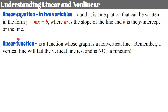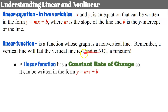To be a linear function, it's a function whose graph is a non-vertical line. Remember, a vertical line will fail the vertical line test and is not a function — so a vertical line is still a line, but it's not a linear function. A linear function has a constant rate of change, and that's why it can be written in the form y = mx + b, where m, our slope, represents our constant rate of change.